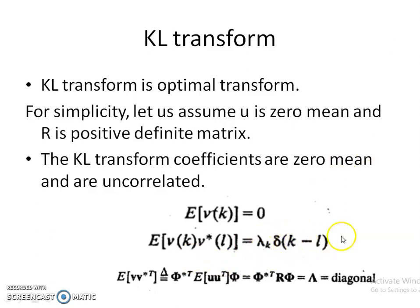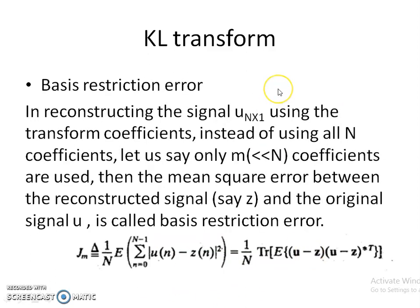For KL transform of images, the procedure is almost the same as other transforms, except that we need to compute the basis images from the image itself. Take the row-order vector form of the image (curly-u) and compute the autocorrelation matrix R = E[curly-u · curly-u^T]. Compute the orthonormal eigenvectors of R — these become the basis vectors. If R is separable, meaning R(m,n,m',n') = R1(m,m')·R2(n,n'), then the basis images become separable as well.